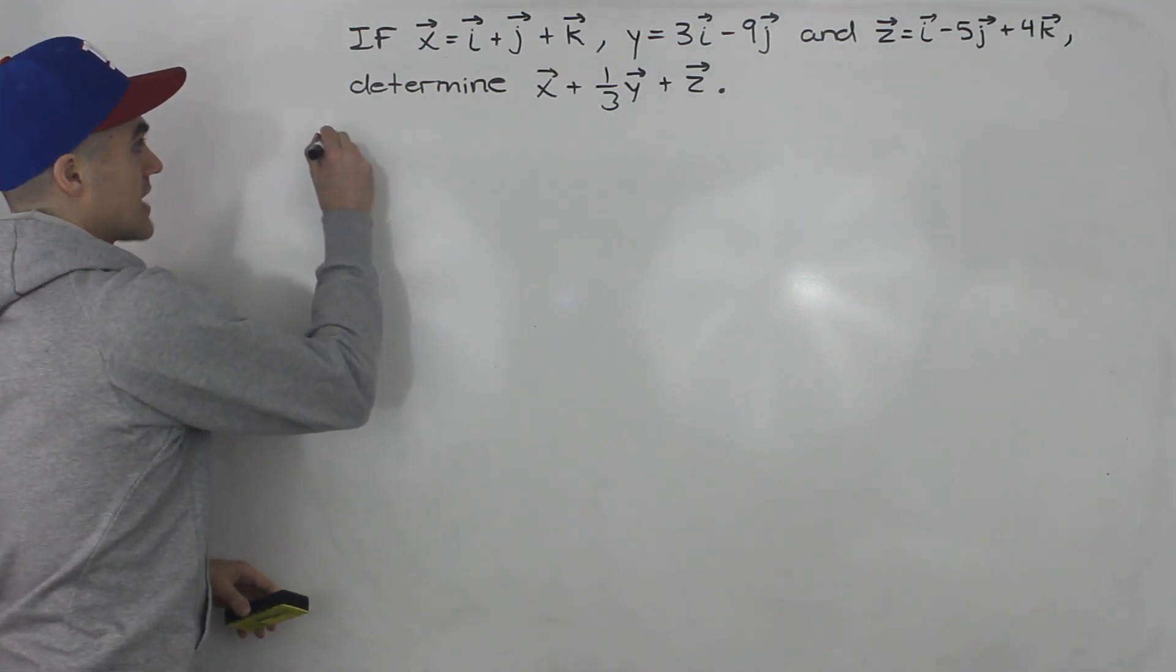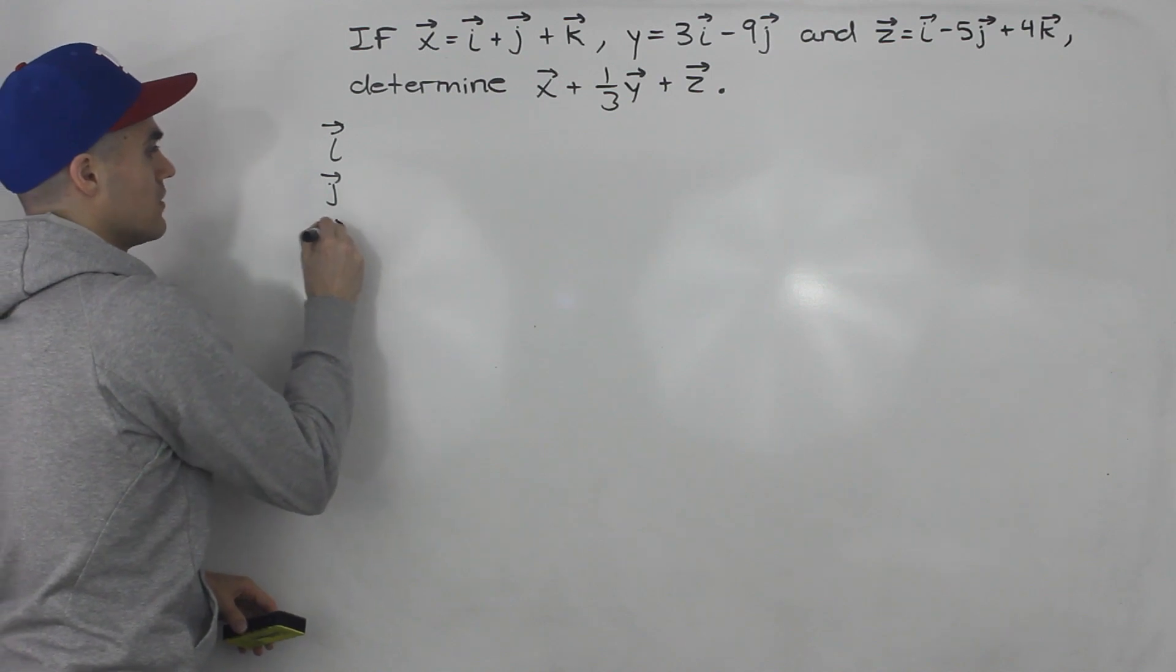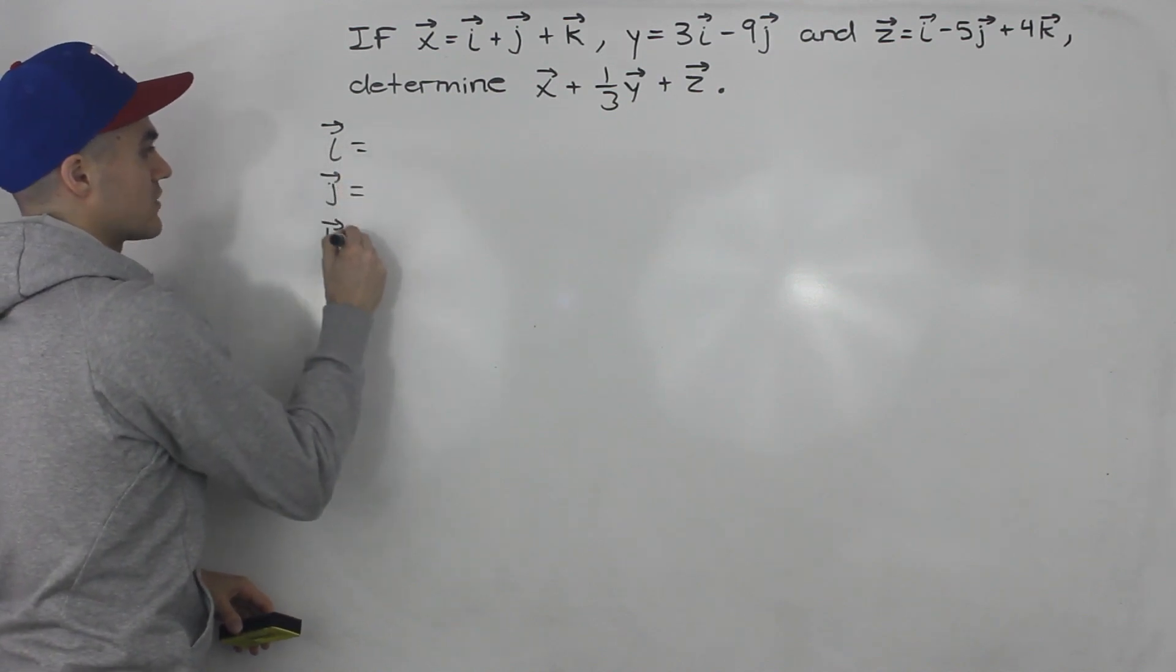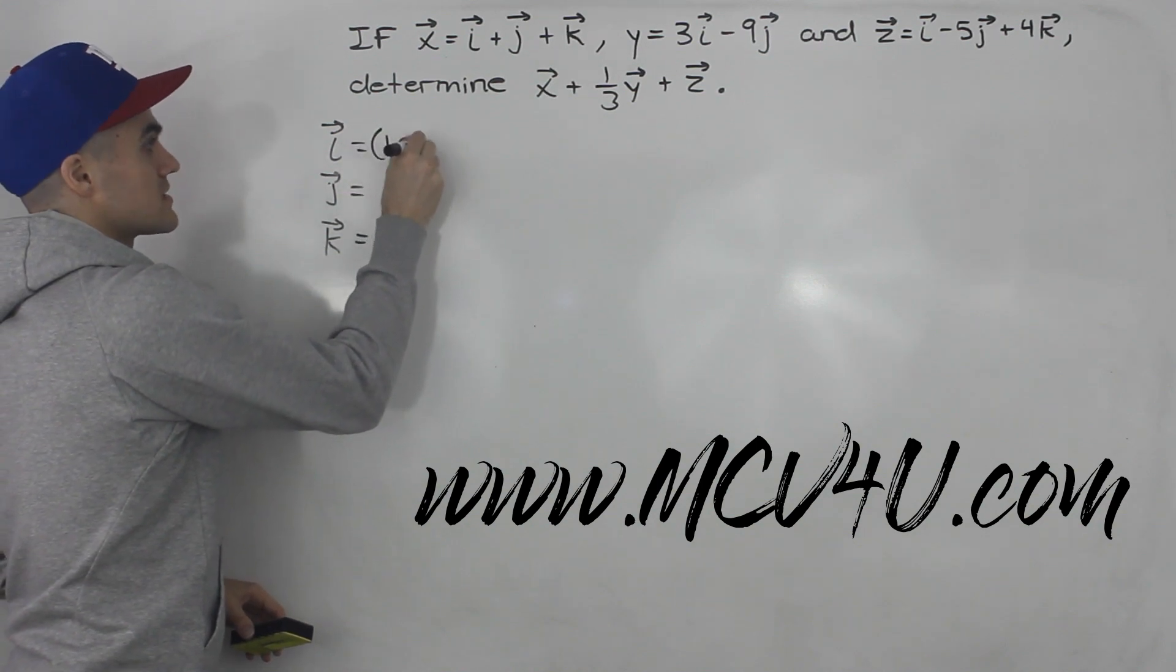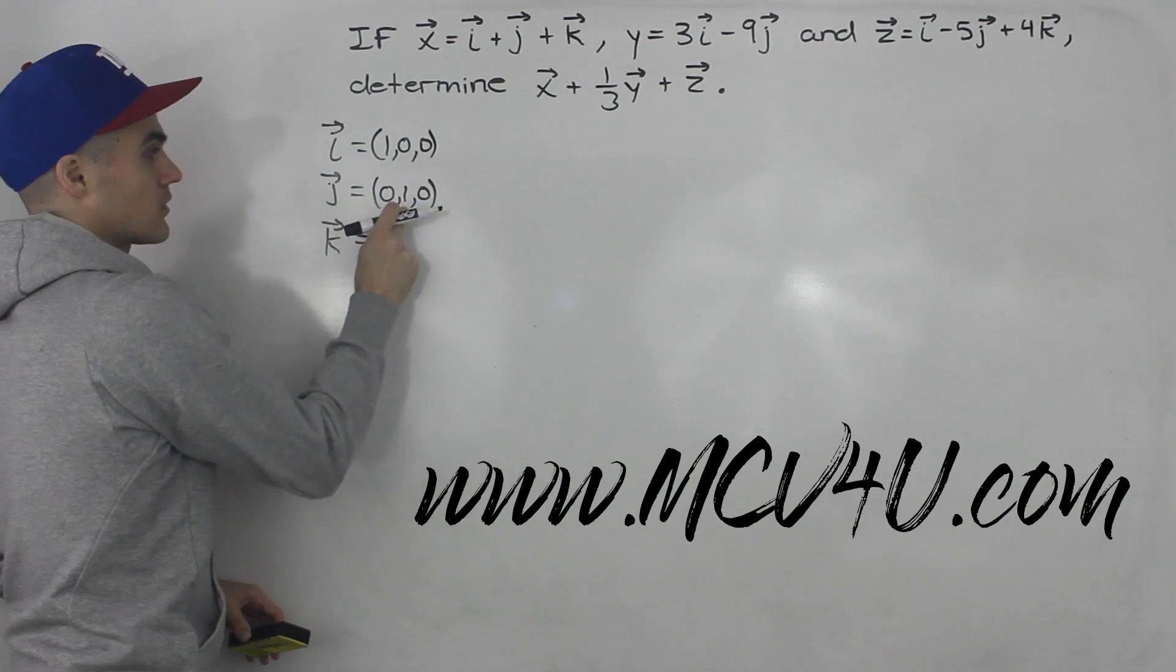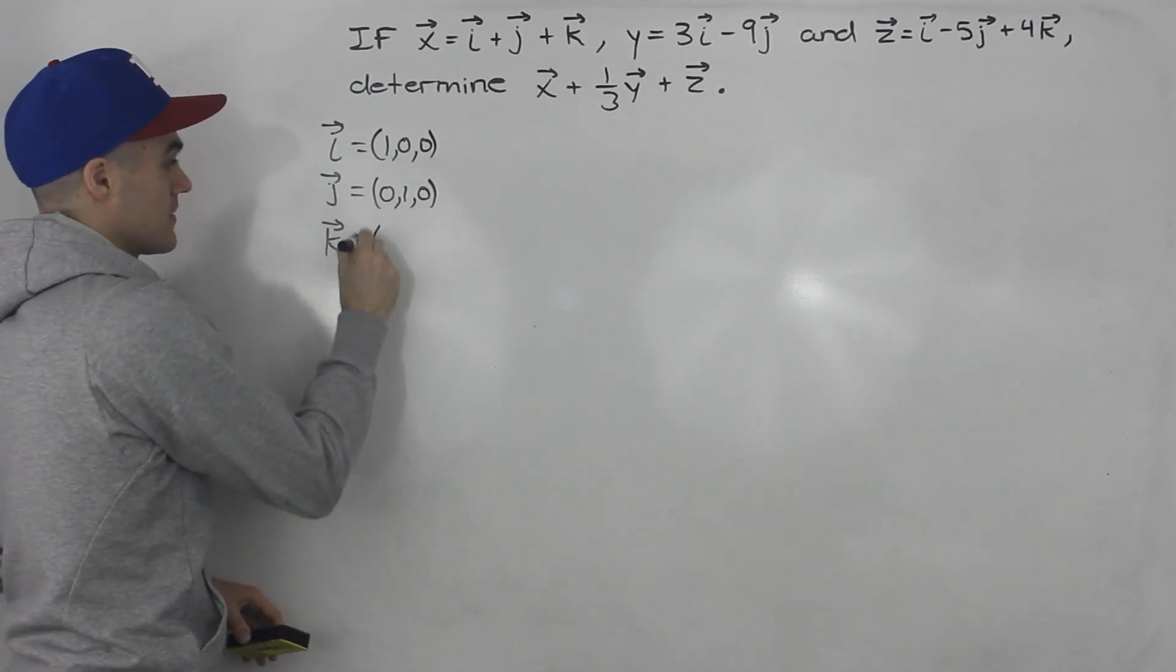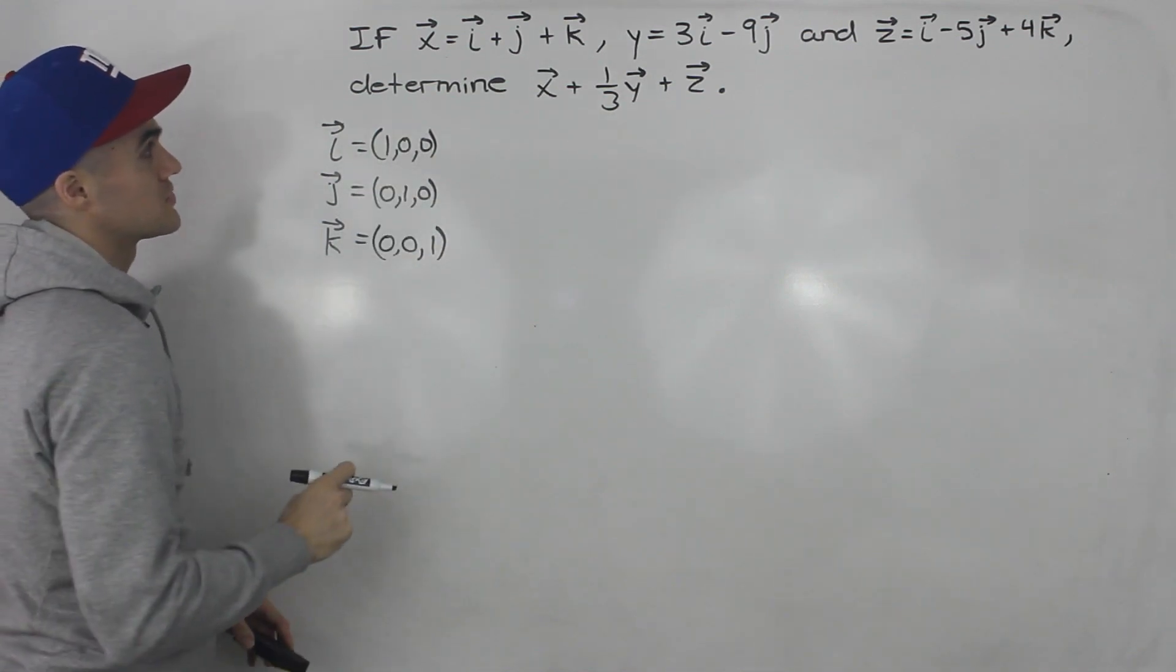Now this i, this j, and this k, if you remember, these are just unit vectors on the axis. So i is just 1, 0, and 0. j would be 0, 1, and 0. It would represent the y-axis and then k represents the z-axis and they're just all unit vectors.